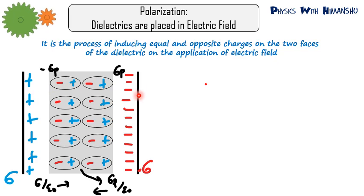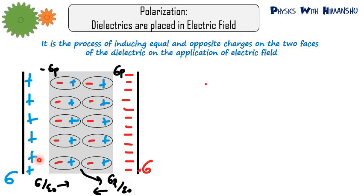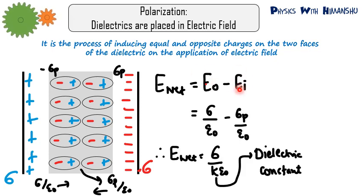Due to the capacitor plates the electric field is sigma/ε₀ from left to right. The induced charges on the dielectric generate their own electric field sigma_p/ε₀ directed from right to left. Since the dielectric's electric field is caused by the external field, the external field is necessarily larger. So the net electric field is E_outside minus E_inside, and from experiments this comes out to be sigma/(k·ε₀), where k is the dielectric constant.